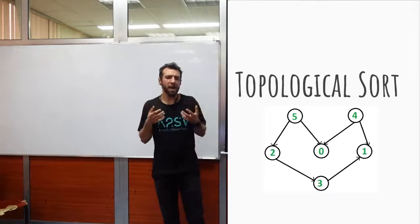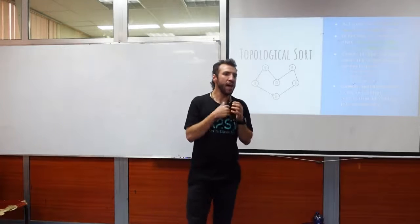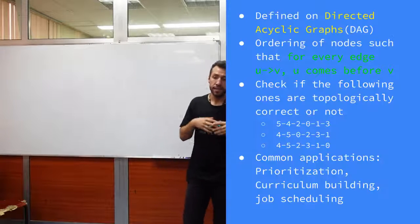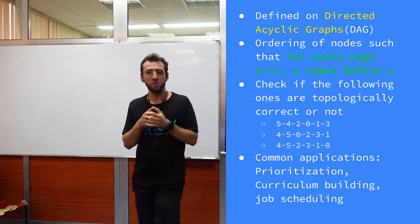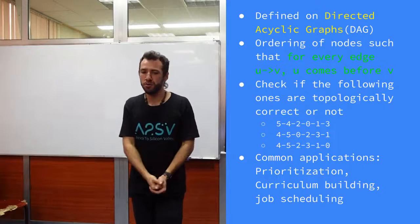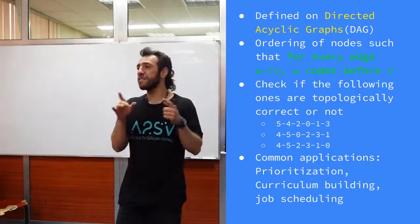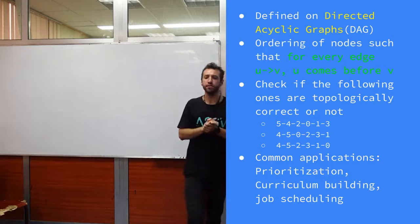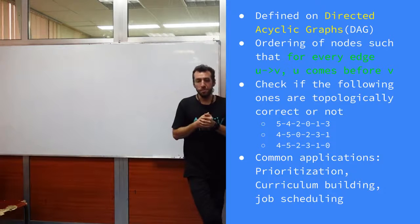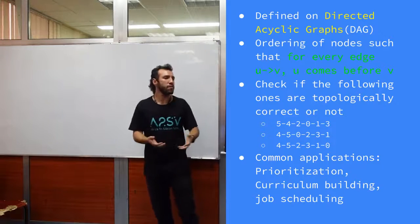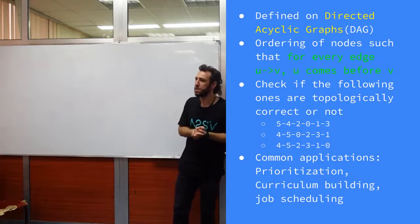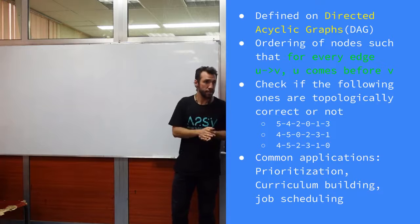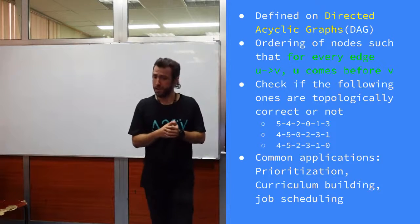First off, when we say topological sort, we are looking for a specific order of nodes in a given graph. But there are specific conditions for this graph to be able to run topological sort on it. We use topological sort for prioritization. Let's say you have some tasks to do and there are some dependencies in between — some tasks have to be finished before other tasks. In such situations, topological sort is very useful.